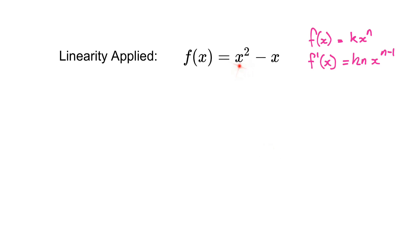So looking at the two parts, we have x squared and minus x. We'll call g of x equal to x squared and h of x equal to minus x to find the derivatives.